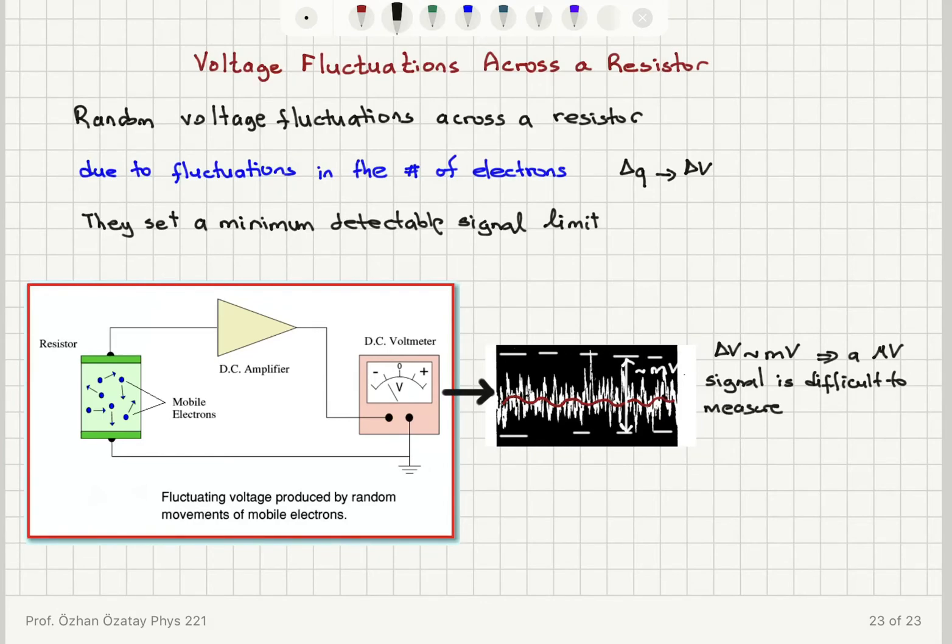And in that case, because this is affecting the signal level we can measure, we refer to these fluctuations as noise. They give us a minimum detectable signal level.